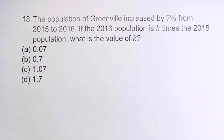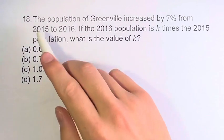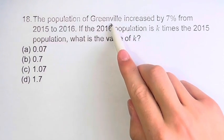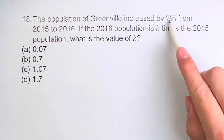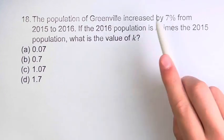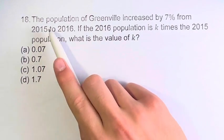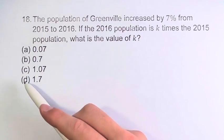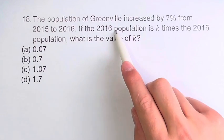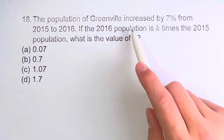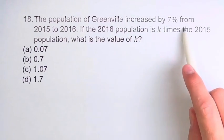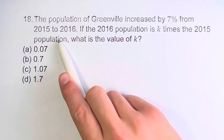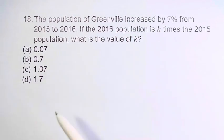Hello and welcome back to another video. In this problem, we're told that the population of Greenville increased by 7% from 2015 to 2016. And we're asked, if the 2016 population is k times the 2015 population, what is the value of k?